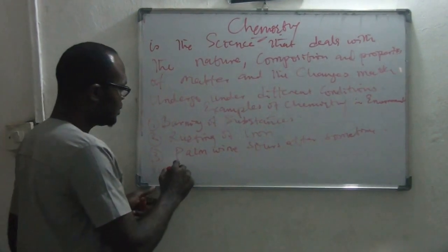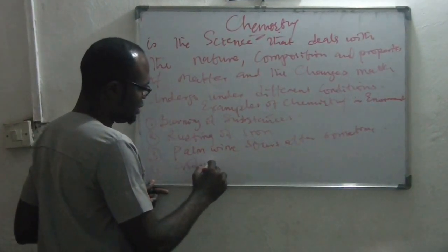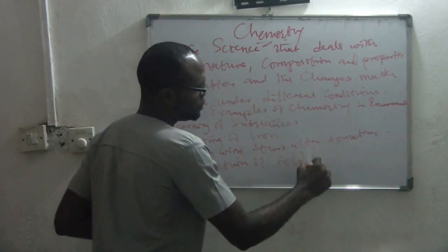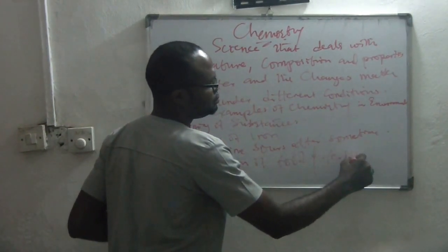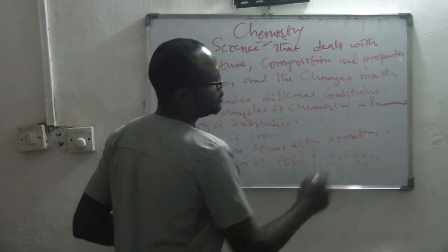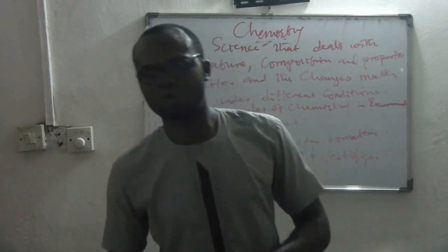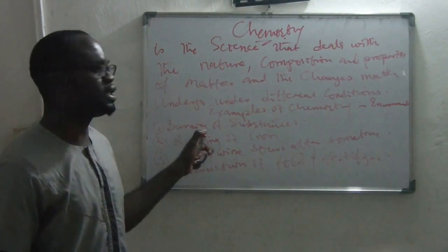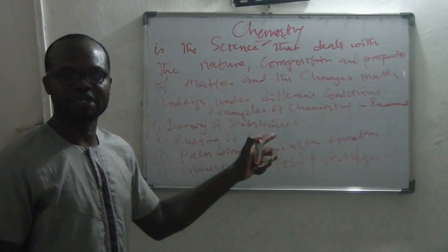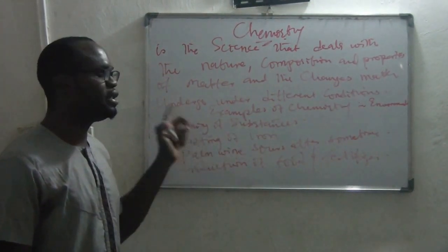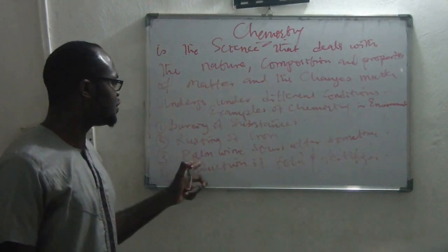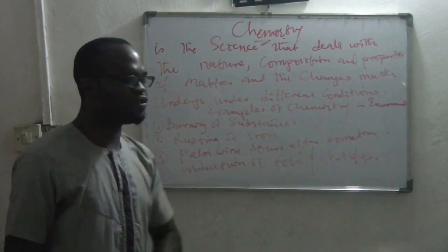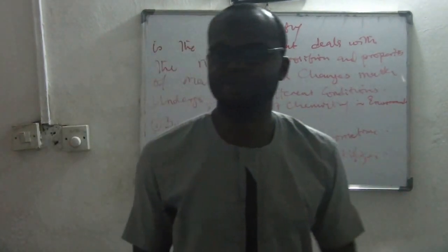Production of fertilizers — that is chemistry. We use chemistry. Production of food — even food and fertilizer. So all this could be explained using chemistry. You can use chemistry to explain the process of burning of substances, rusting of iron, palm wine souring after some time, and the production of food substances.